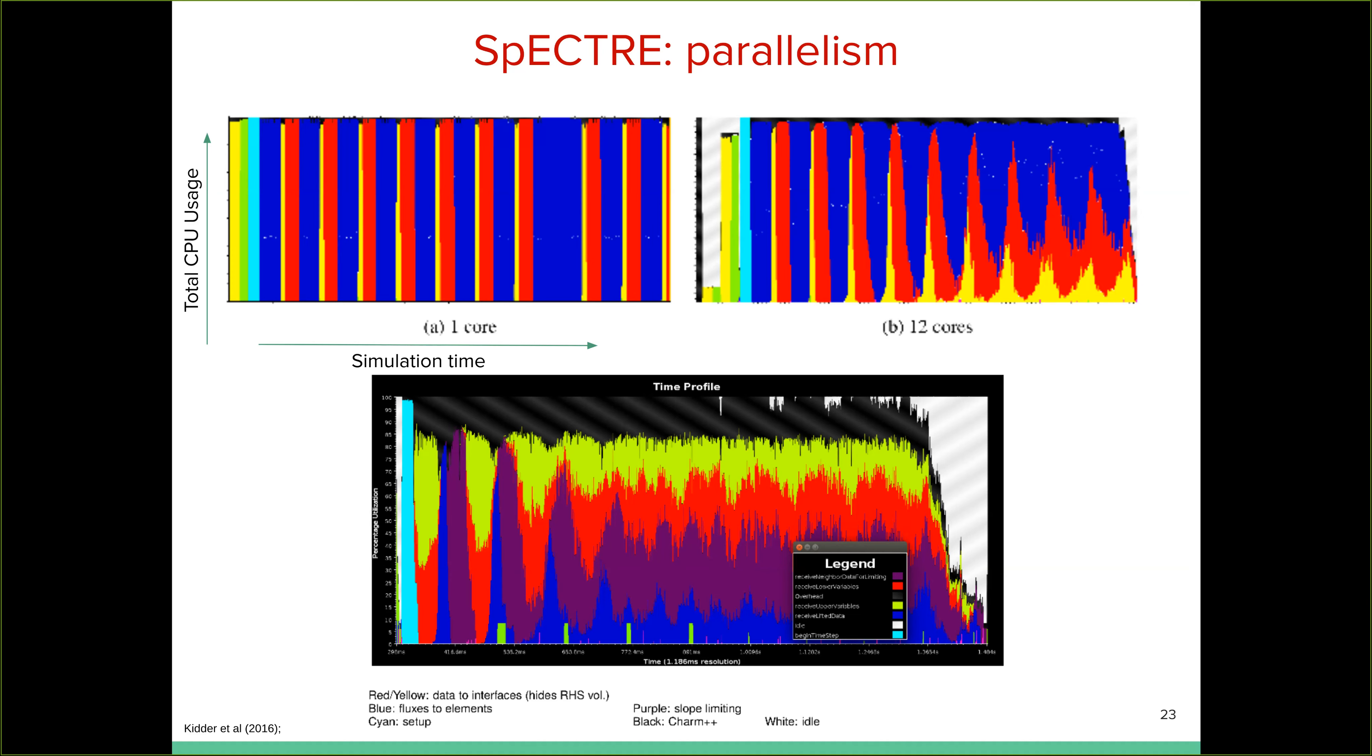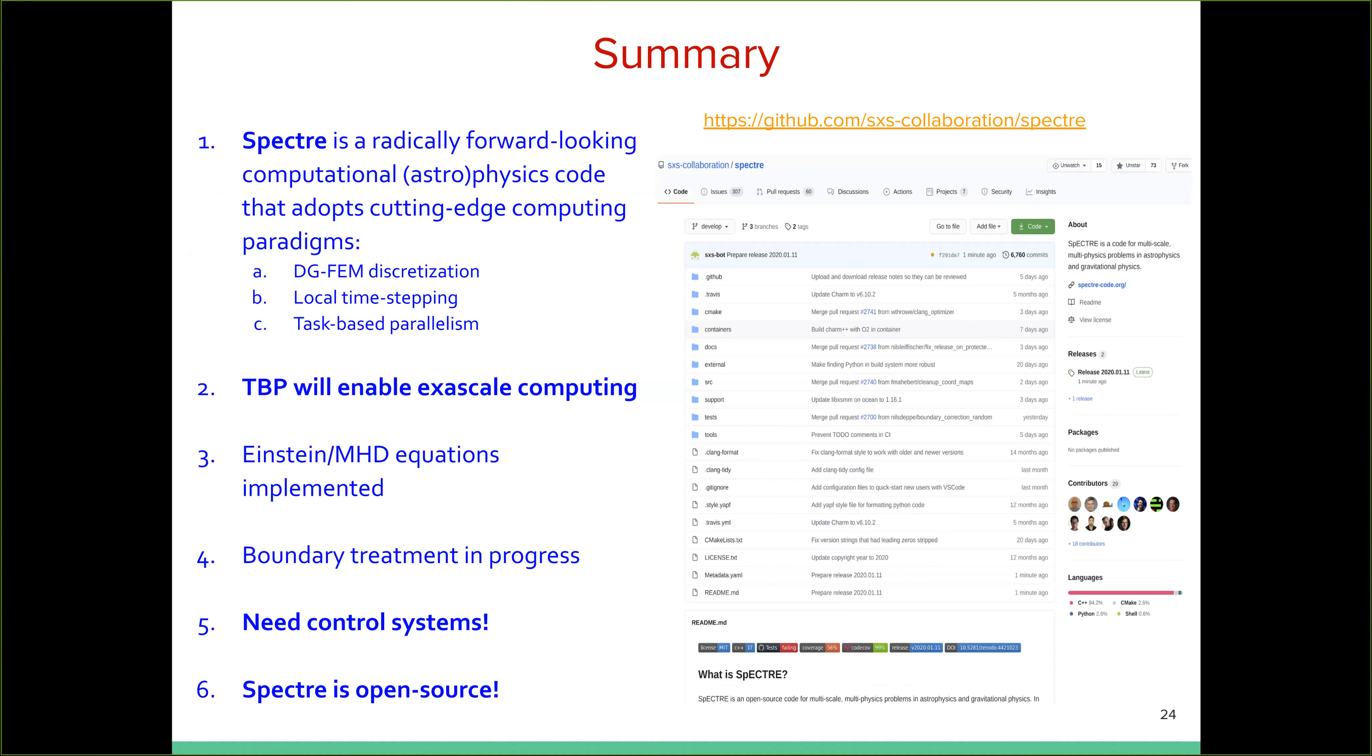Right. So to conclude, Spectre is a radically forward-looking computational physics code. I would say it's not just astrophysics code that adopts the current best known paradigms and all relevant things. For example, the way we discretize, the way we do time stepping, handling inhomogeneous length and time scales, and the way we parallelize the calculations. And as you have already seen, task-based parallelism scales very well, and there's no reason it will not scale to the future of exascale computing.